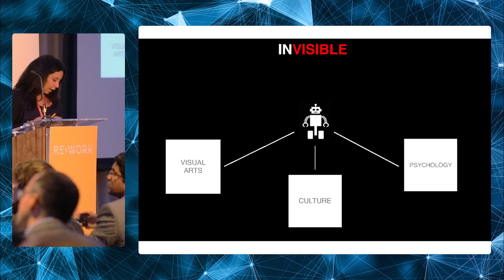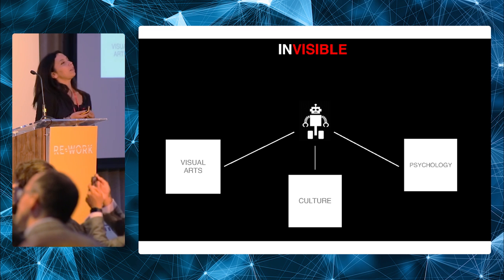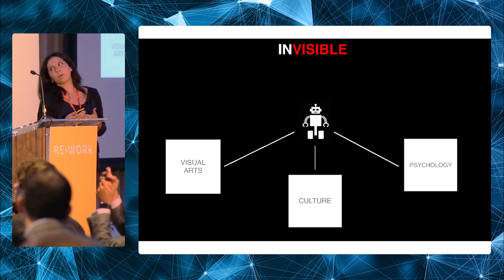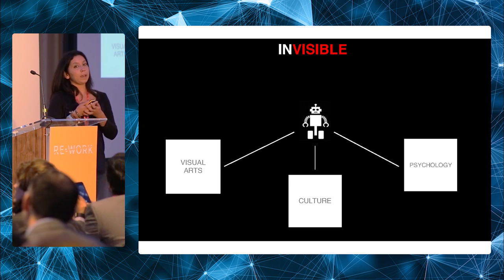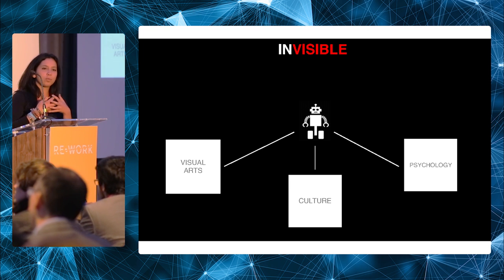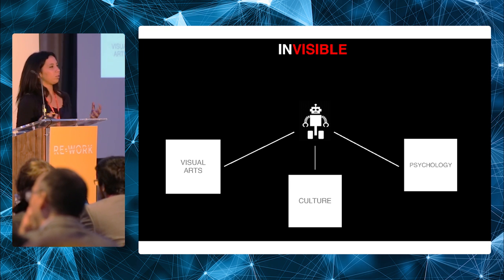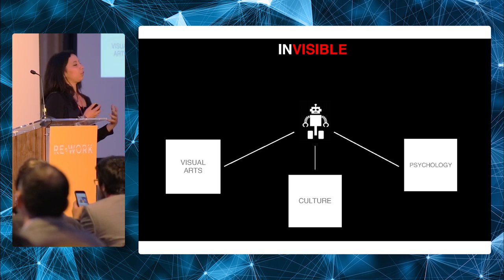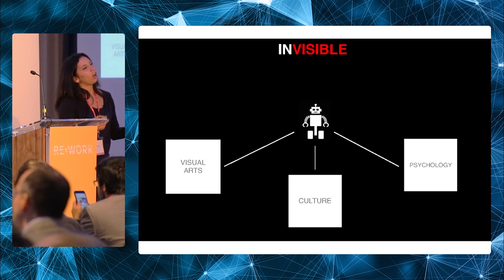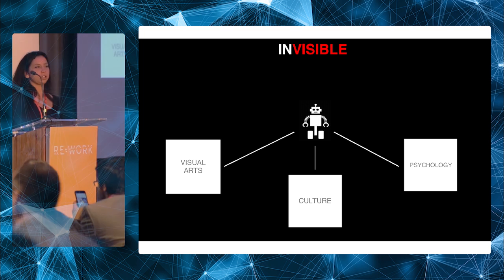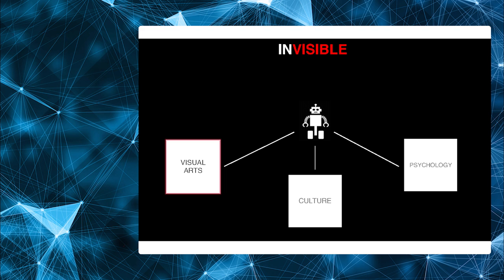That's why we deeply believe that in order to make subjective machine vision frameworks effective, we should break the boundaries of machine vision and embrace disciplines like psychology, art, anthropology, and sociology — disciplines that can enrich the knowledge we ingest into these systems.